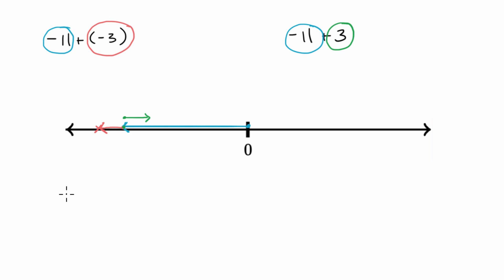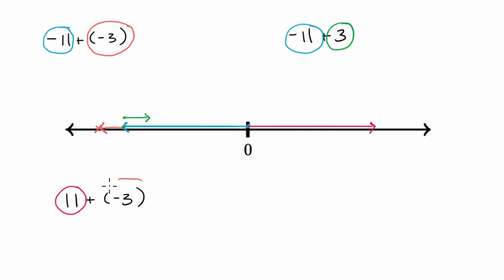Now let's imagine if I were to have positive 11 plus negative three — think about what would happen there. So positive 11, let me do this in red — positive 11 would look something like that. I'm starting at zero and I go 11 to the right. And now I'm going to add negative three to that. So where I left off here, I'm now going to go three to the left — what's a negative three? I'm going to go to the left over here. So it might get us someplace right around there. I went 11 to the right and then I go three to the left, so I'm still going to end up to the right — still going to have a positive value, but it's going to be less positive than that 11.